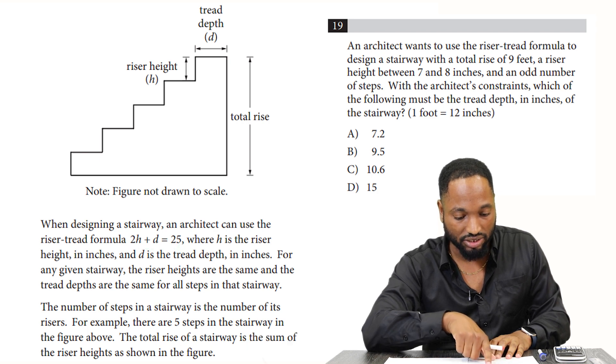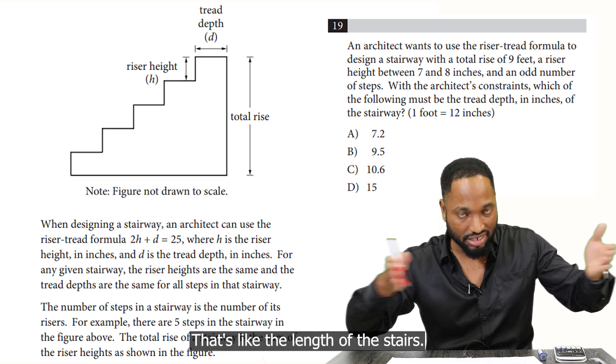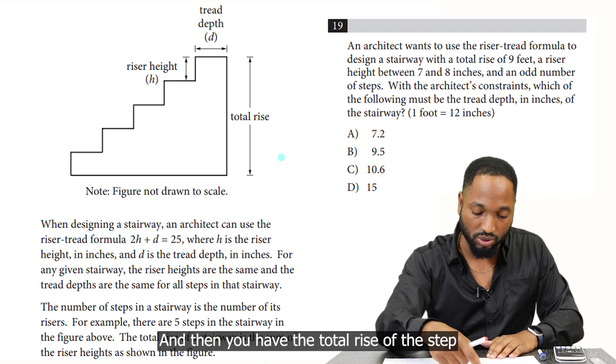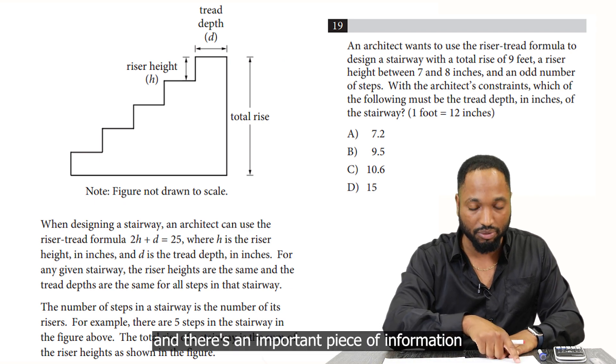Each h is the rise or height, d is the depth, that's like the length of the stairs. And then you have the total rise of this step, and there's an important piece of information given here.